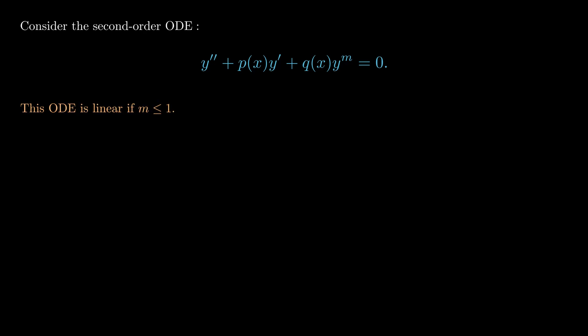If we consider the ordinary differential equation y'' + 2x·y' + 3x²·y = 0, then this is a linear differential equation because m is equal to one. If we consider the differential equation y'' + 2x·y' + 3x²·y³ = 0, however, then this is not a linear differential equation because m is equal to three.